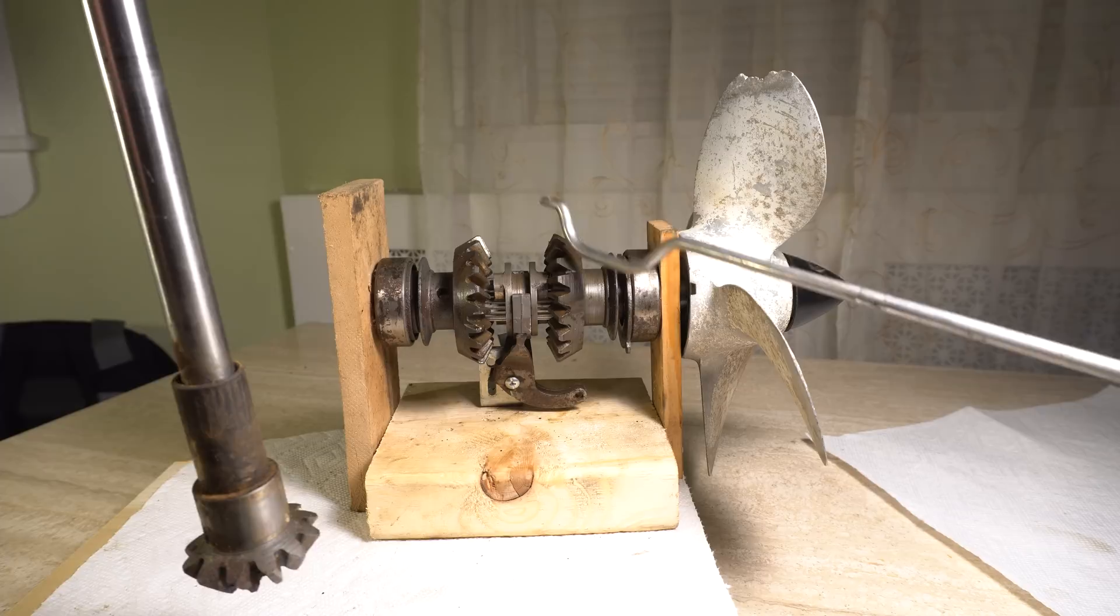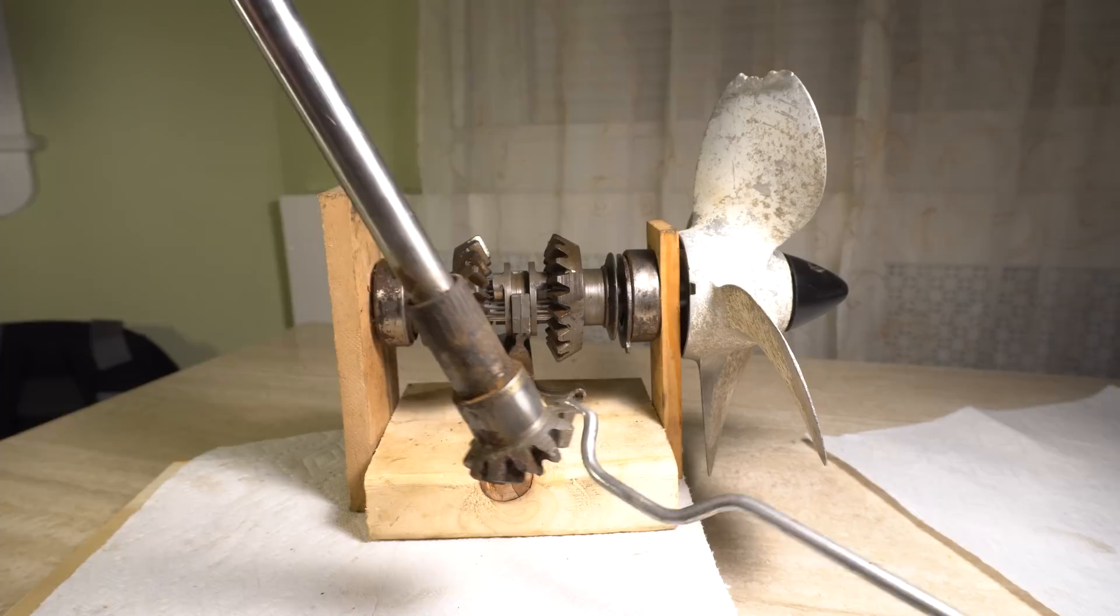So what happens is you have three pieces: the gears, the shift rod, and the drive shaft.